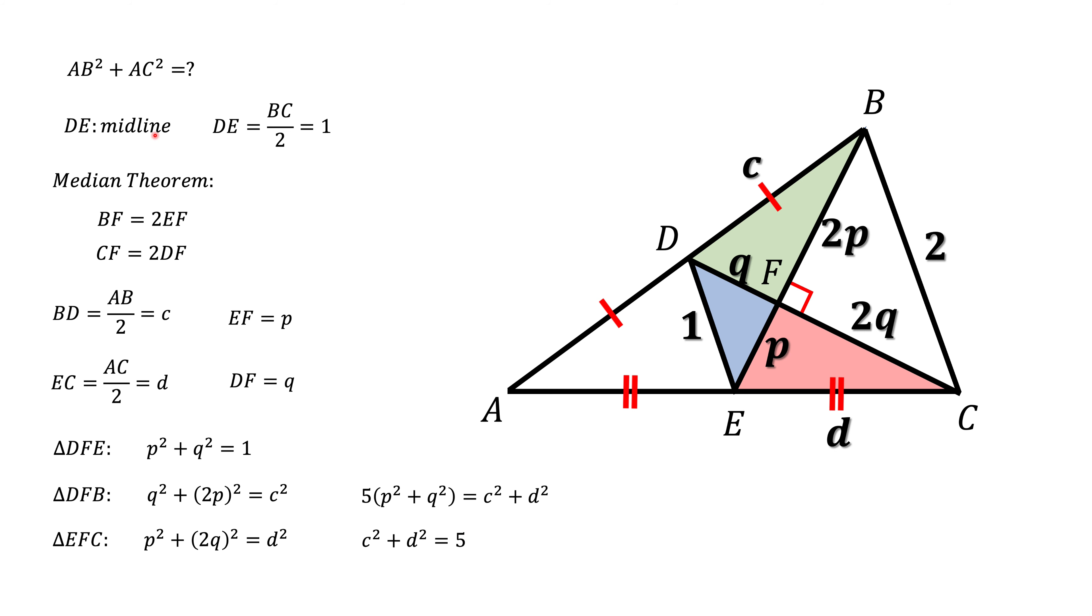Now we need to remember that we are looking for AB squared plus AC squared. We know that AB will be 2C and AC will be 2D. And if we use that knowledge, we quickly find that AB squared plus AC squared equals 20.